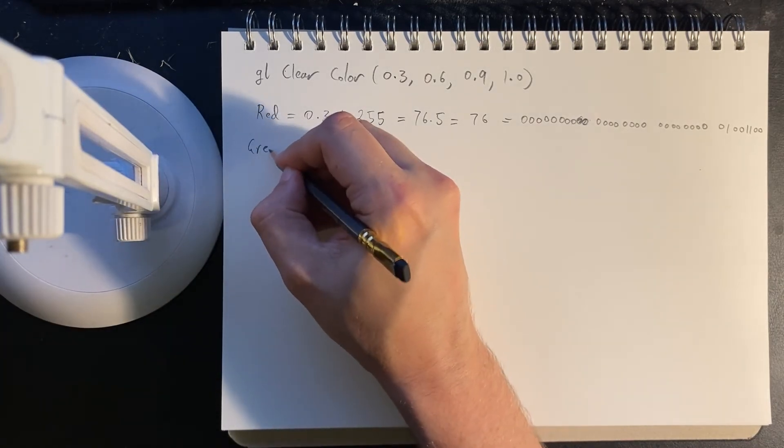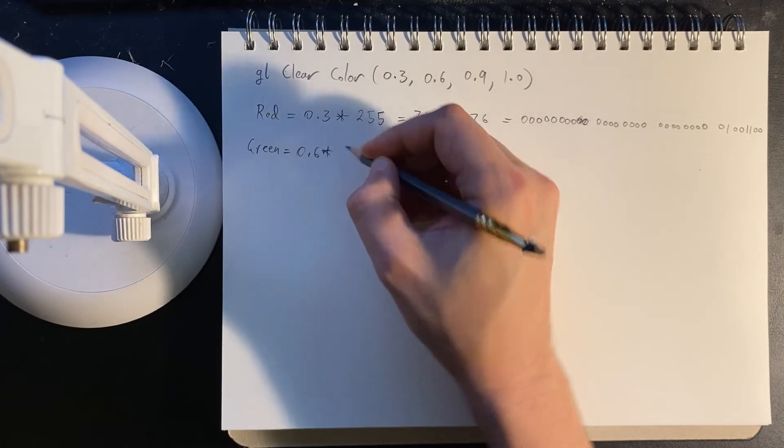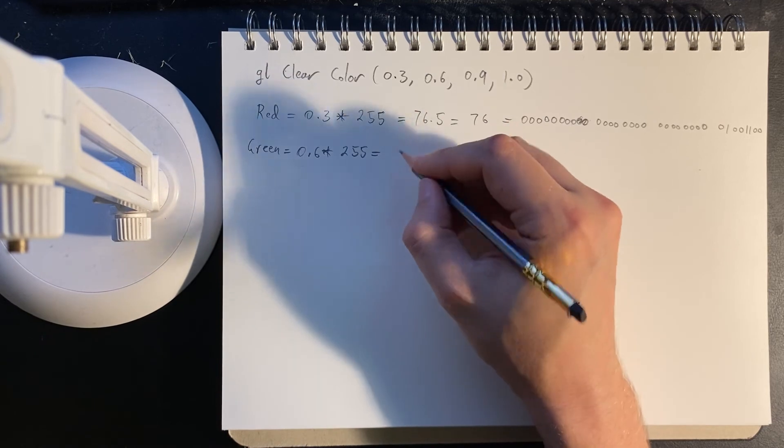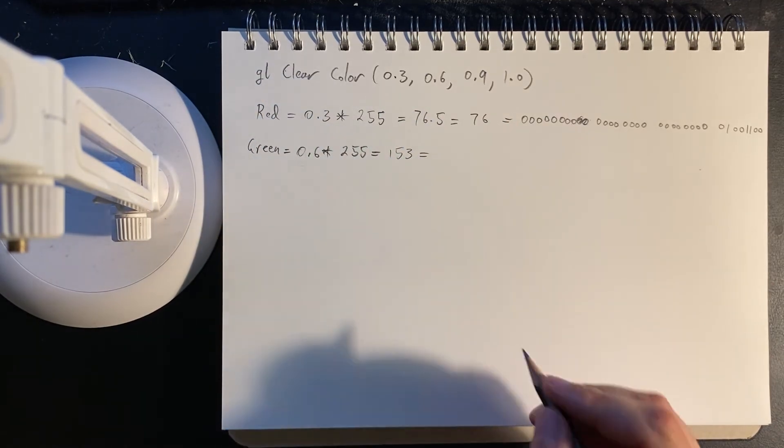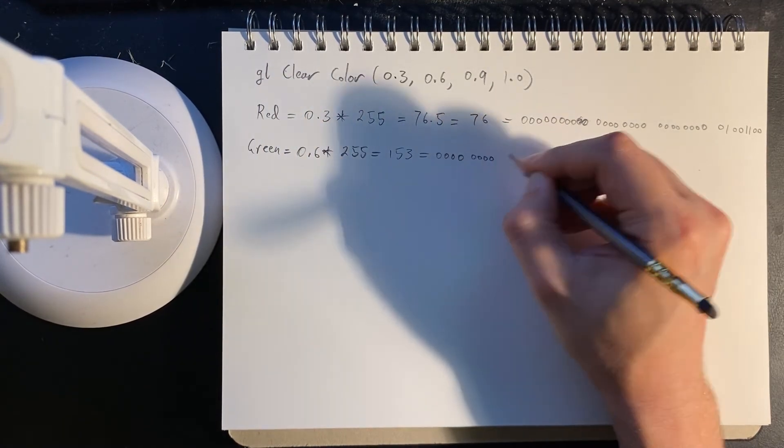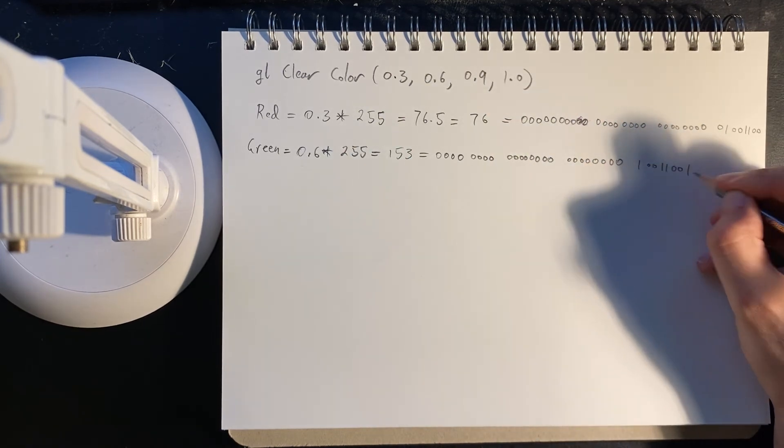Then we calculate the green, which is 0.6 of 255, which is 153. And then write that out as a 32-bit number.